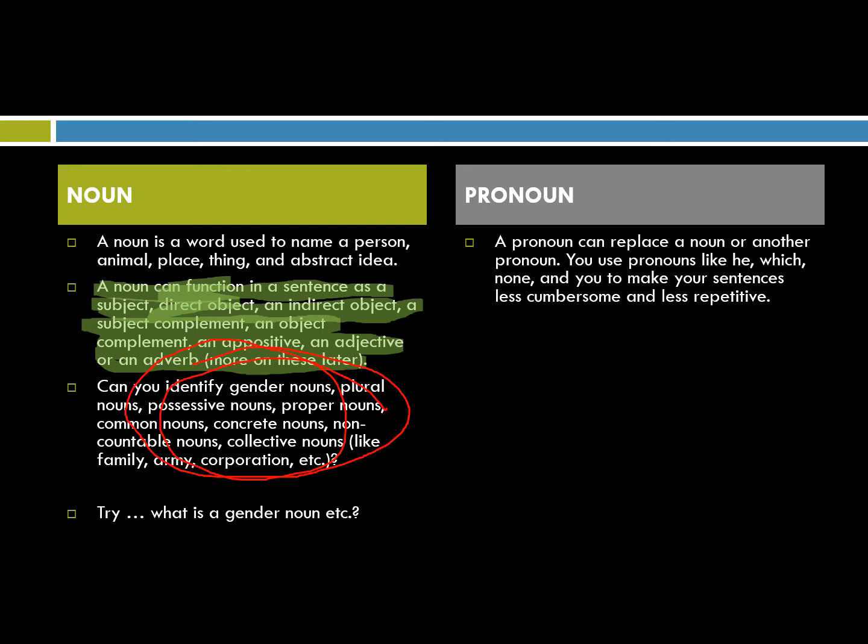Concrete nouns are nouns that are not abstract — a table or a chair. Abstract nouns are things like love or integrity — very abstract concepts. Non-countable nouns refer to nouns that are the same whether singular or plural, such as gravel, oxygen, sugar, or moose. A collective noun is things like family, army, or corporation. A pronoun replaces a noun or sometimes another pronoun — for example, he, you, it, she, him, his.